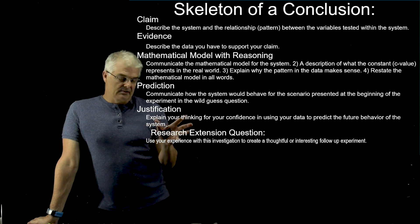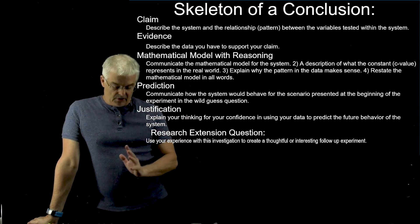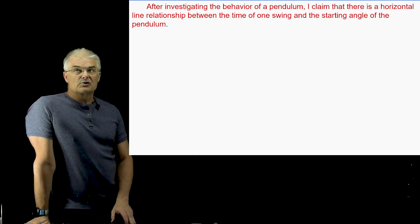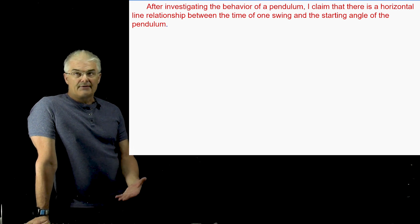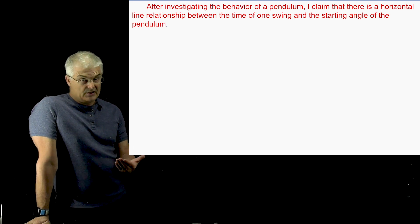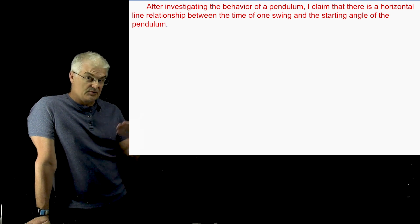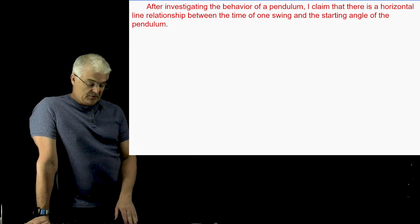What could you do that's different? So let's take a look at an example. We've all now done the pendulum lab. And I want us to walk ourselves through this. So the claim here would be, this is the first part. After investigating the behavior of a pendulum, I claim there is a horizontal line relationship between the time of one swing and the starting angle of the pendulum.